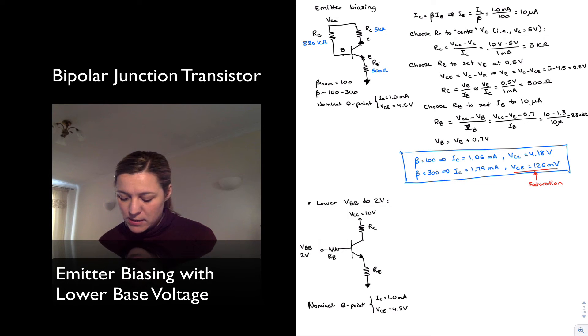I'm going to choose Rc so that I center my Vc value at 5 volts midway between the two supplies, or in this case Vcc and ground. And so my Rc is still going to be 5 kilo ohms. I'm going to set the voltage drop across my emitter resistor to 0.5 volts, and so that's going to set my emitter resistor to whatever we calculated before, 500 ohms. And so the only thing that really changes.